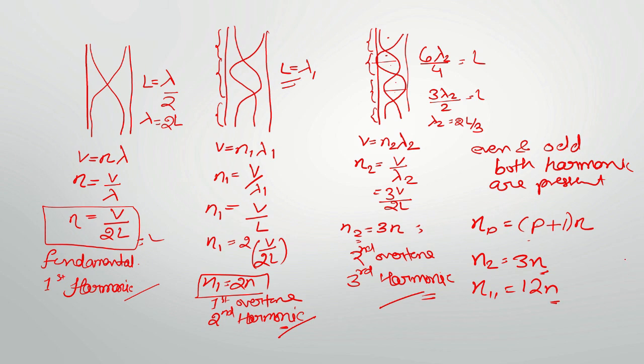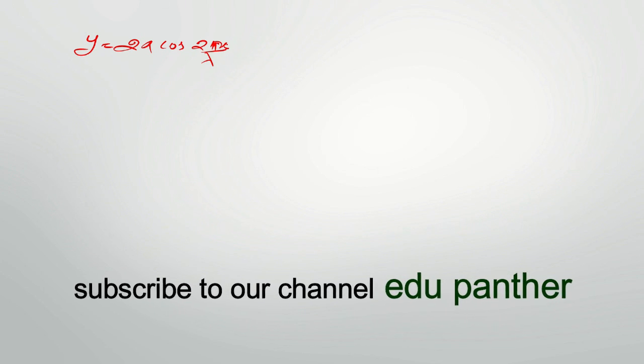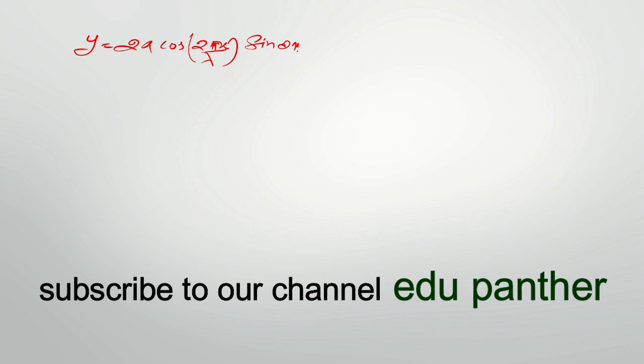We have finished all three cases: string, closed pipe, and open pipe. For this chapter, we have covered the constant derivation. First one was y equals 2A cos 2 pi x by lambda, sin 2 pi n t. Then we derived equation for string, then closed pipe, and the last one was open pipe. These four questions from this chapter are very important for board exams. That is it for this session. In the next session, we will study some new chapter. Thank you.